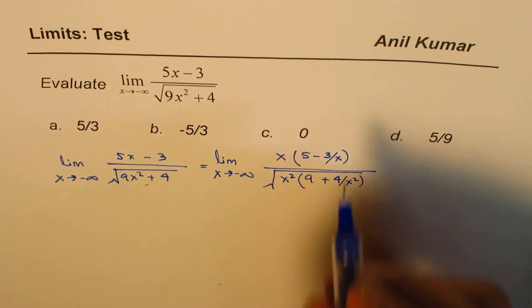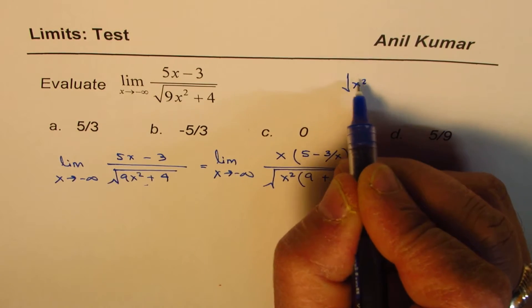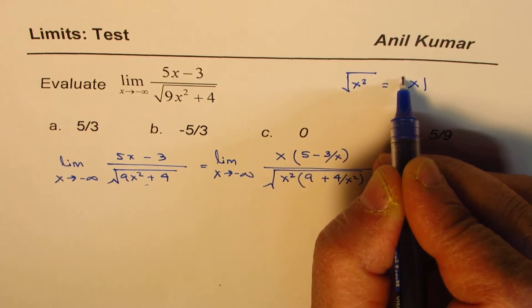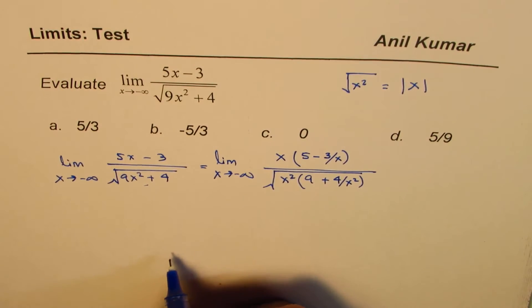Now, what is square root of x square? Square root of x square is not x but absolute value of x. This is important to understand.